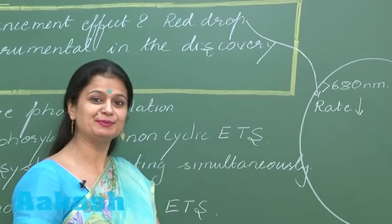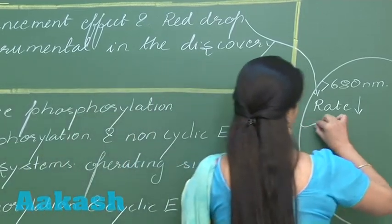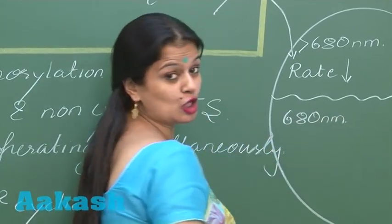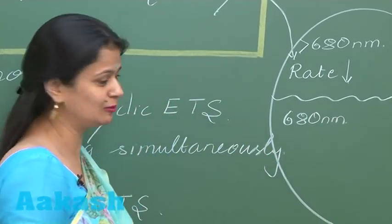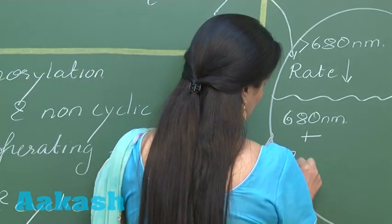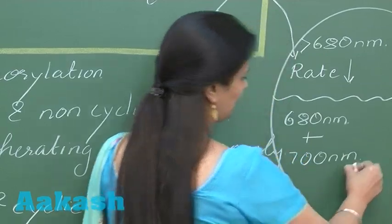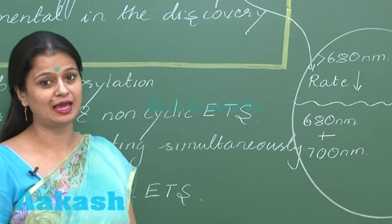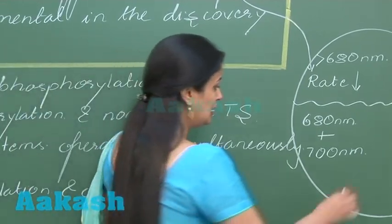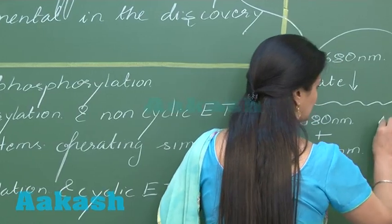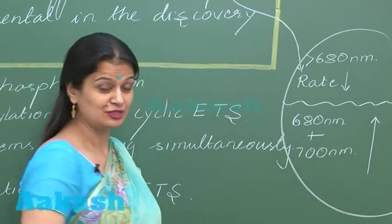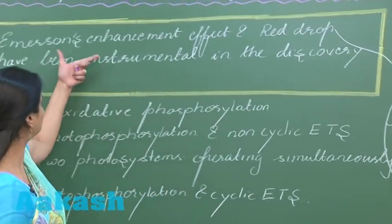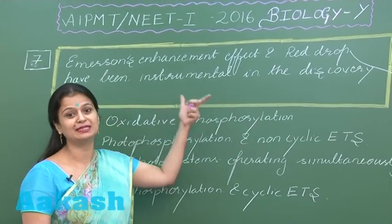Then Emerson performed a second experiment. He gave 680 nanometers of light to Chlorella and simultaneously provided 700 nanometers of light. When both 680 nm and 700 nm were provided simultaneously, there was a sharp increase in the rate of photosynthesis. This he called the Emerson Enhancement Effect.